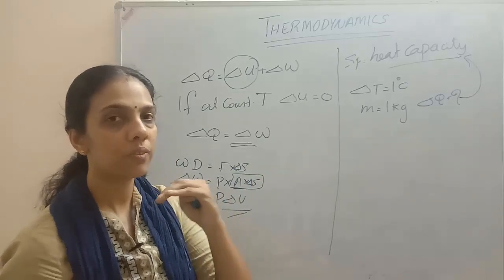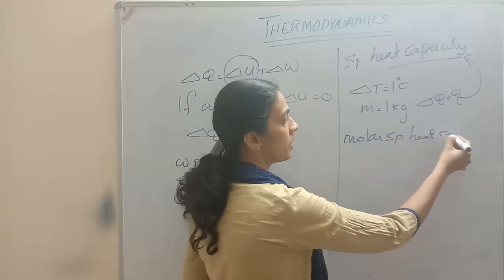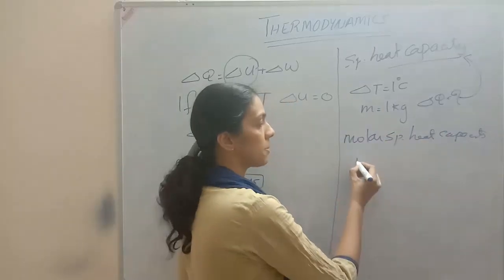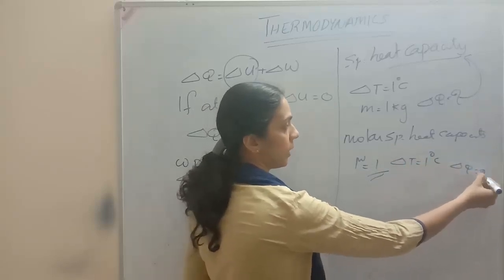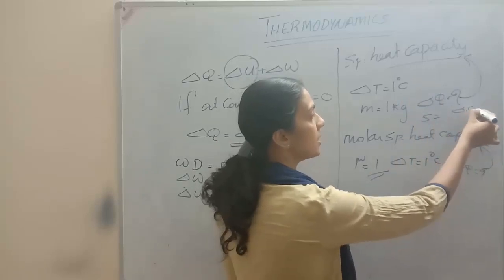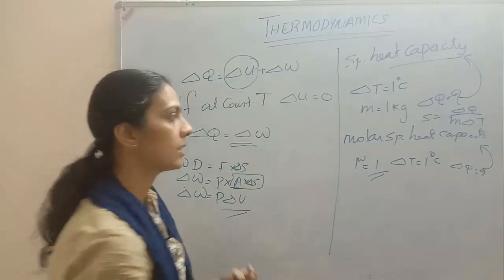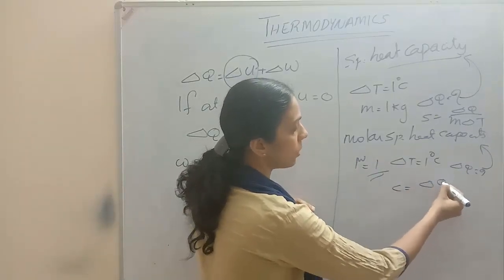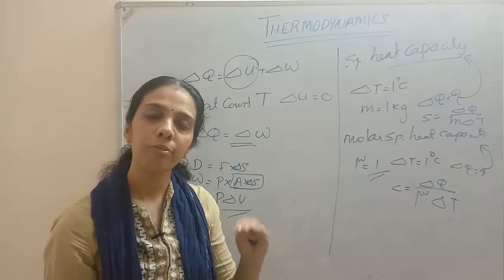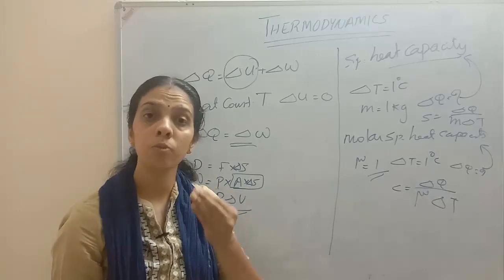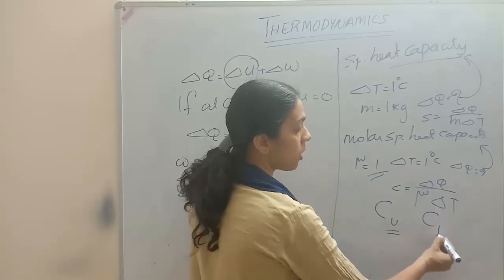Next is molar specific heat capacity. That is for 1 mole of substance — if mu equals 1 and delta T equals 1 degree Celsius — how much heat energy is required. Specific heat capacity is written as delta Q divided by M delta T, and molar specific heat capacity C equals delta Q divided by mu delta T. If it is at constant volume it is Cv; if it is at constant pressure it is Cp.